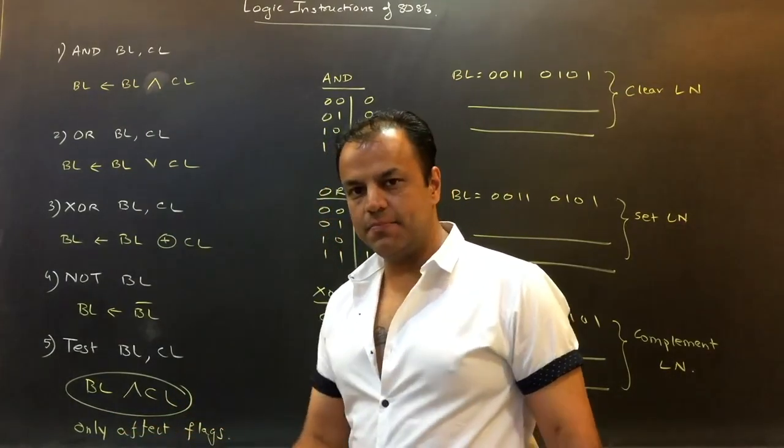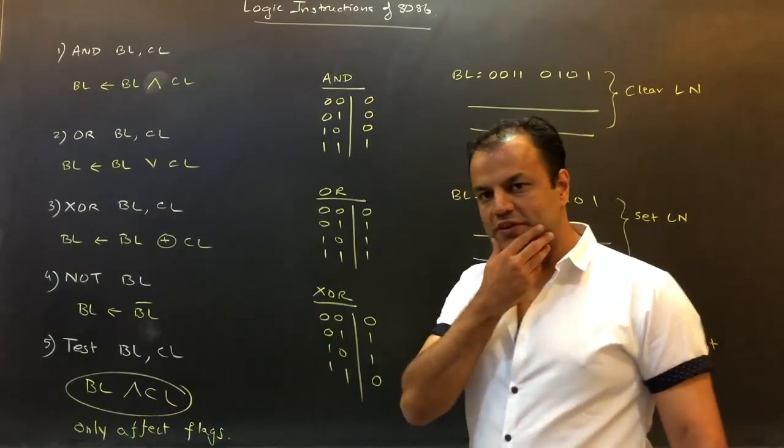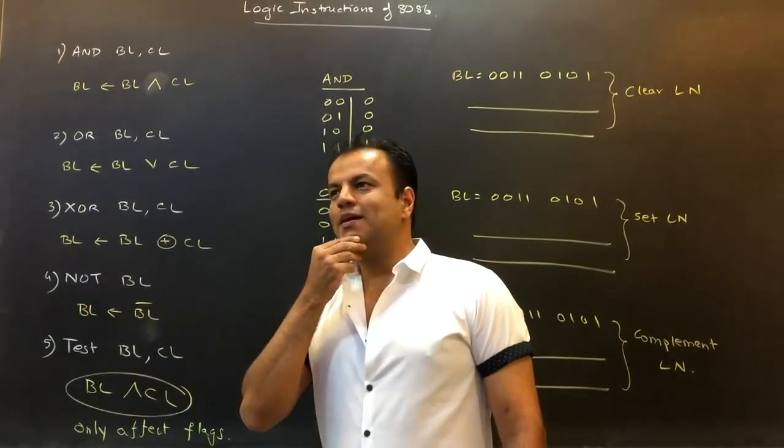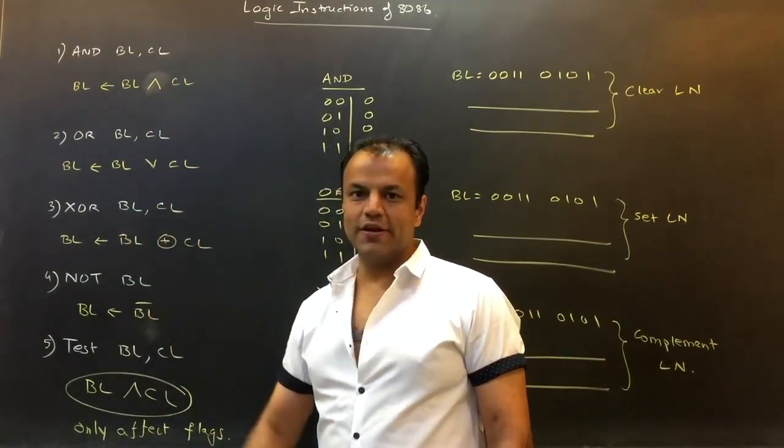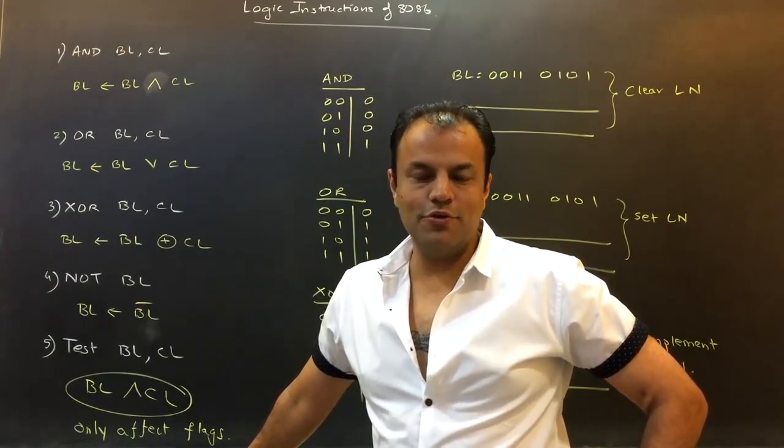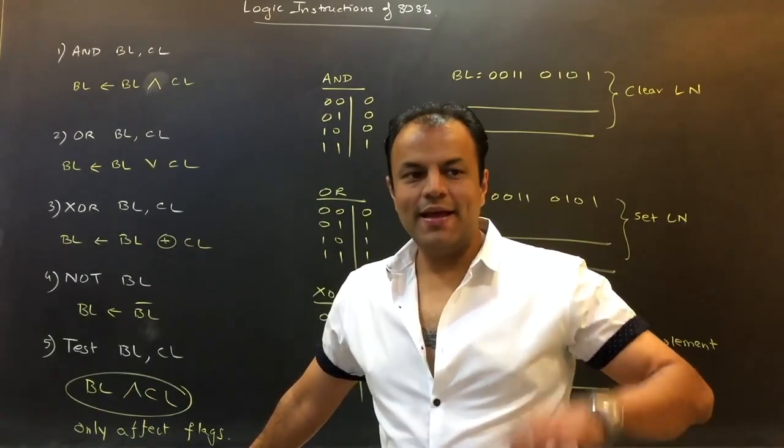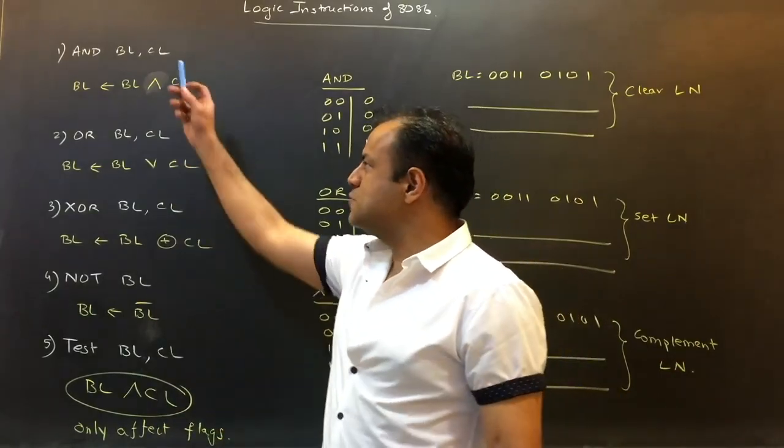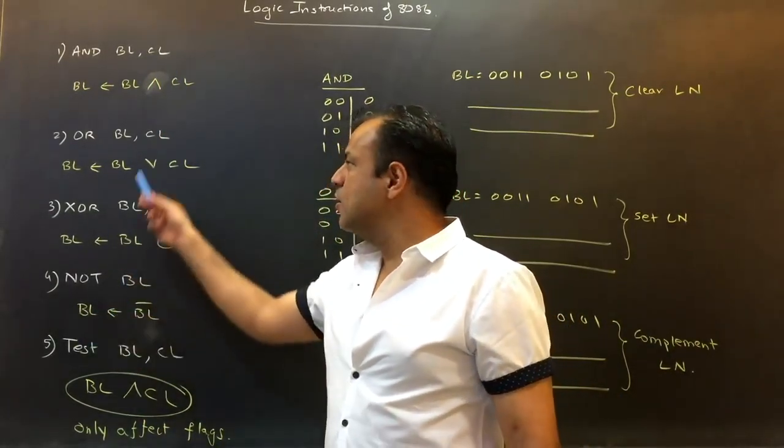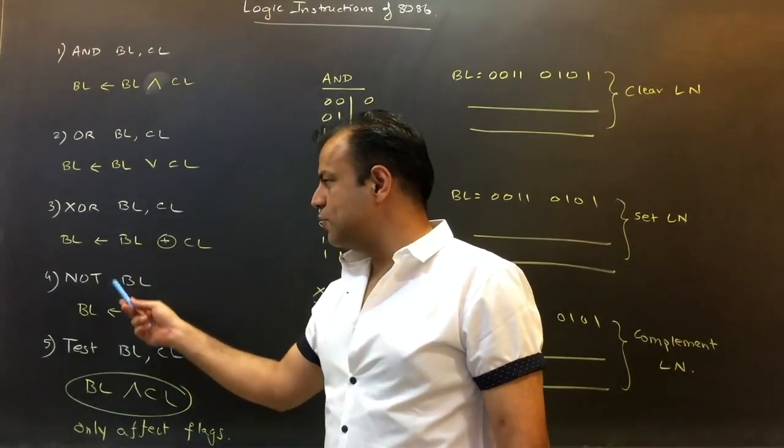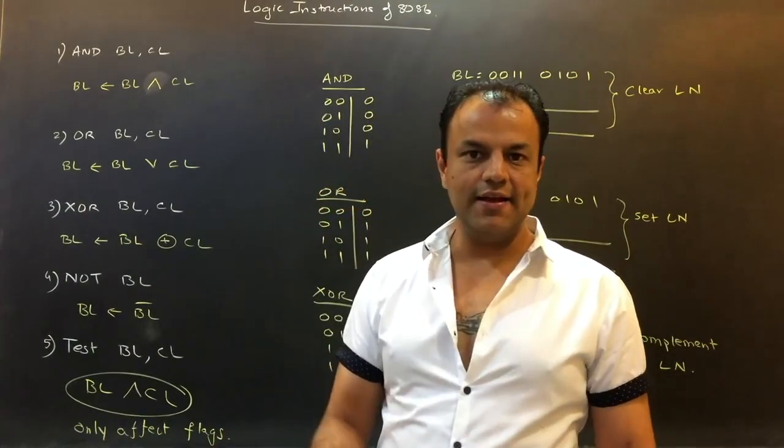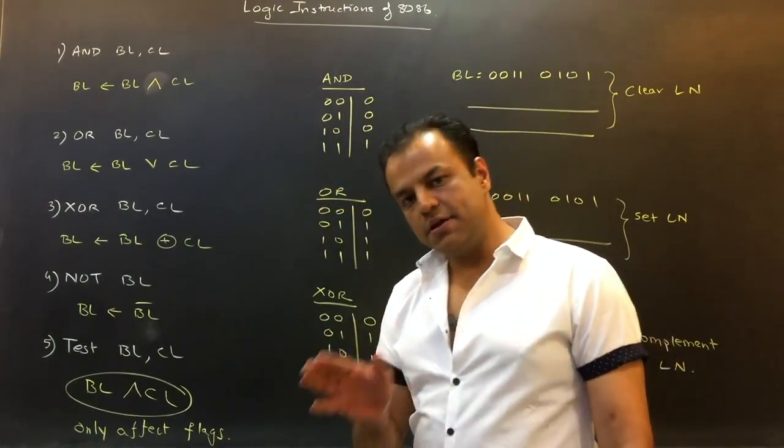TEST will not store the result. It will only affect the flags. I repeat, it will only affect the flags. Now, what's the use of these instructions? You got AND gate, you got OR gate, you got XOR gate. So suppose somebody asks you, what if I want to do a NAND? What do I do? Now, if you know your gates properly, what is a NAND? An AND gate followed by a NOT gate. So first perform an AND, follow it up with a NOT, that is as good as a NAND. OR followed by a NOT is a NOR. XOR followed by a NOT is an XNOR. So the job of NOT gate is to produce those three derived gates: the NAND gate, NOR gate and the XNOR gate.